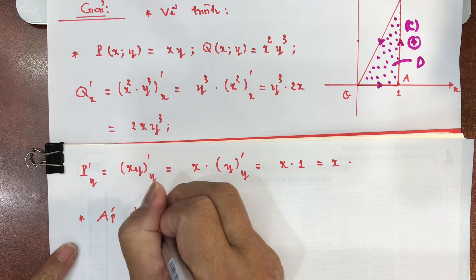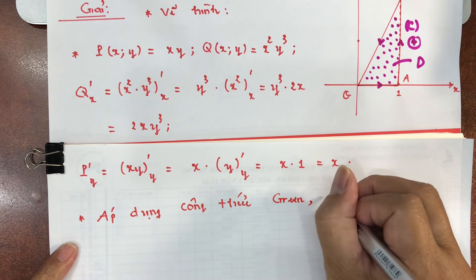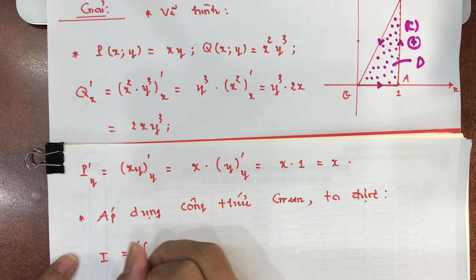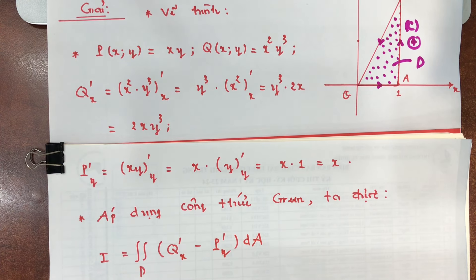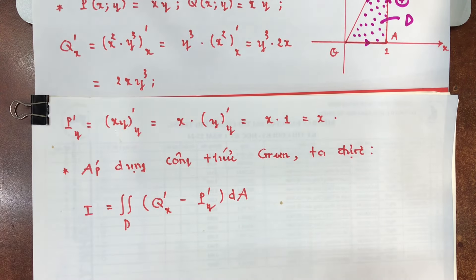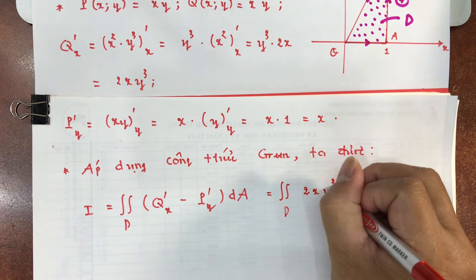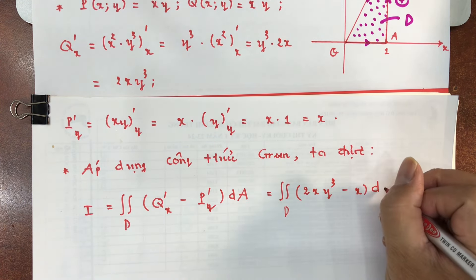Áp dụng công thức Green: tích phân đã cho bằng tích phân kép trên miền D của (∂Q/∂x − ∂P/∂y) dA. Thay vào: ∂Q/∂x = 2xy³, ∂P/∂y = x. Tích phân kép trên miền D của (2xy³ − x) dA.